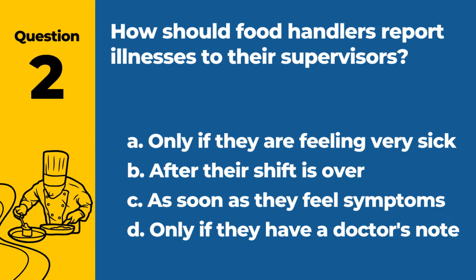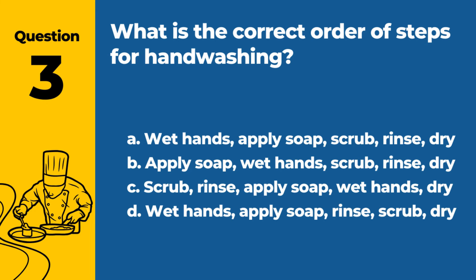Question 2. How should food handlers report illnesses to their supervisors? a. Only if they are feeling very sick. b. After their shift is over. c. As soon as they feel symptoms. d. Only if they have a doctor's note. Answer: c. As soon as they feel symptoms. Food handlers should report illnesses to their supervisors immediately upon feeling symptoms to prevent the spread of illness.